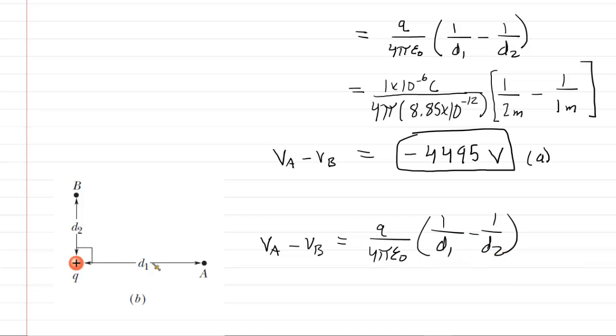Now what's interesting here is that these values for D1 and D2 haven't changed. In other words, D1 is still 2 meters, and D2 is still 1 meter. So because those values haven't changed, nor has the charge changed, we don't even have to really recalculate this because it's going to be the same answer. It's negative 4,495 volts. So this would be the correct answer to part B as well.